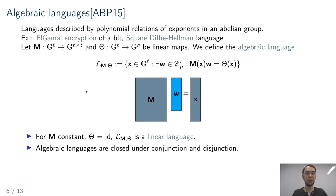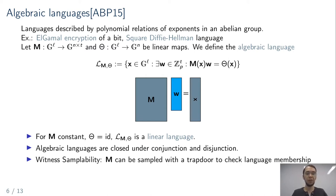Algebraic languages have the nice property of being closed under conjunction and disjunction, so the disjunction of two algebraic languages is itself an algebraic language, giving us OR proofs for free. Another property we can define is witness sampleability, which means the language matrix function can be sampled together with a trapdoor allowing us to check language membership. This comes from linear languages, where the trapdoor is a vector in the kernel of the language matrix.